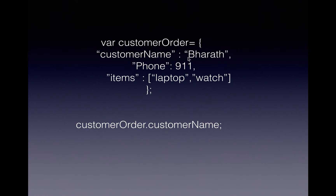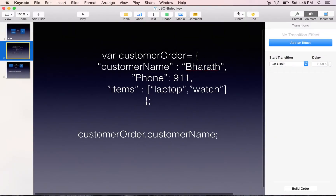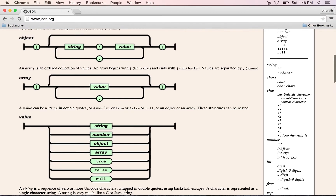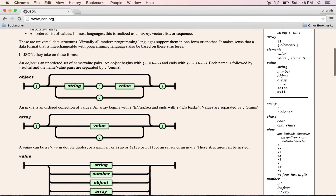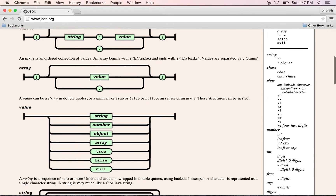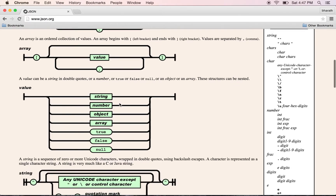The best way to see the different types of values that are supported is by going to the json.org website. Once you go to json.org, you see a beautiful explanation of what JSON is right on the home page. It can have any number of string-value pairs. An object is comprised of a string-value pair within curly brackets. The value itself can be a string, a number, another object, an array, boolean values like true and false, and null. So these are all the values that are supported in JSON.